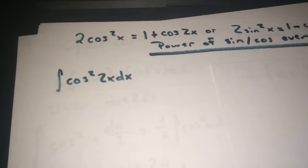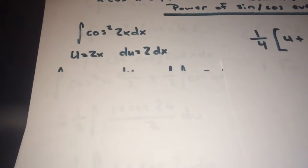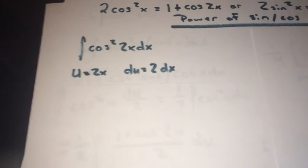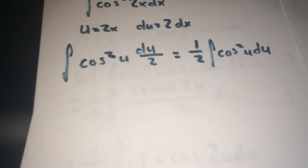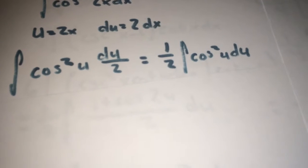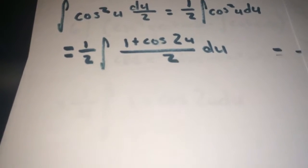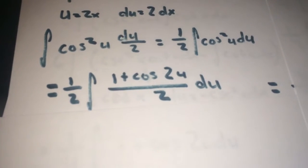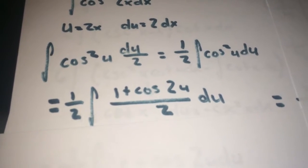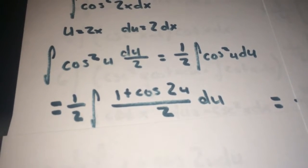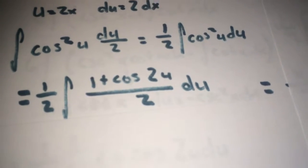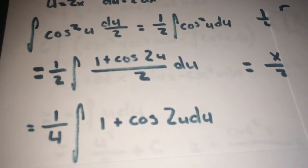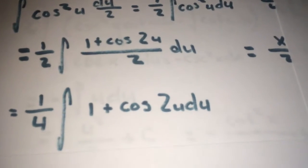First I'm going to use substitution: u equals 2x, so du equals 2 dx. That gives the integral of cosine squared u, du over 2. Pulling out the one half gives one half times the integral of cosine squared u du. Applying the identity, that becomes one half times the integral of (1 plus cosine 2u) over 2 du, then pulling out another one half gives one fourth times the integral of 1 plus cosine 2u du.